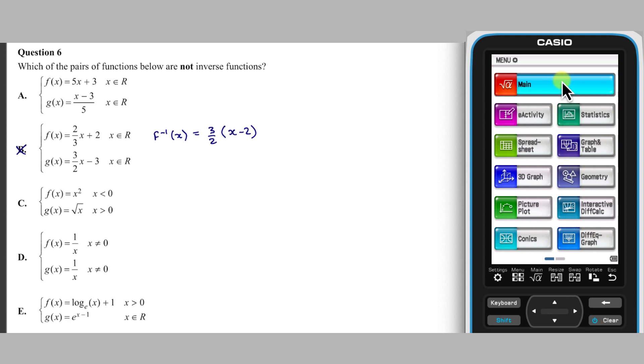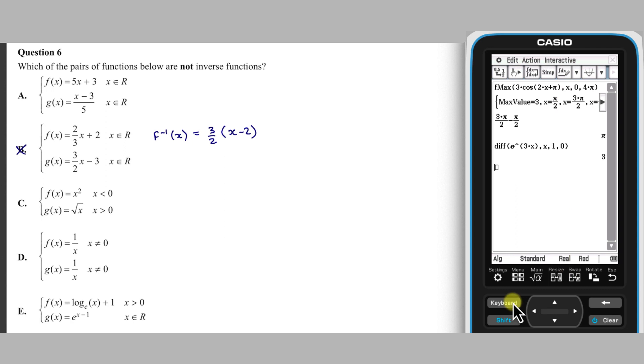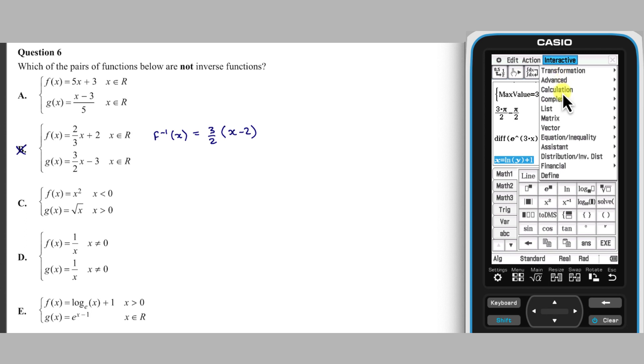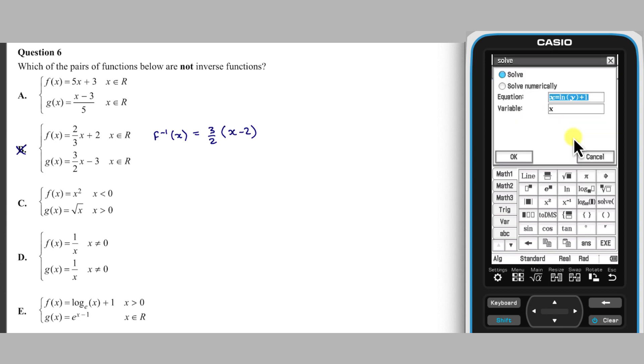The most efficient way to do this is to enter the function in the main app, with the switching of variables already done and using y in place of f of x. y can then be made the subject of this equation by accessing the interactive equation menu and using the solve command to solve for y.